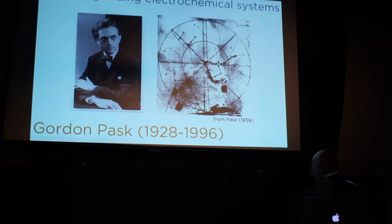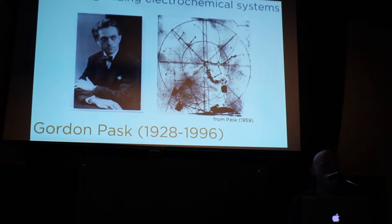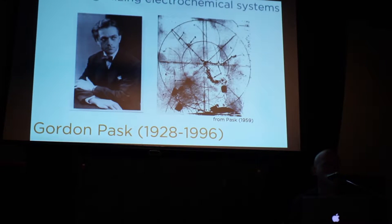What Gordon Pask did back in the 1950s was create what he called an organic computer, at a time when the rise of the digital computer hadn't yet peaked, and he was exploring other means of computation — in particular, analog computation. What you're seeing here is a picture from one of his papers showing what he called dendritic growth within a bath of ferrous sulfate, which is basically a bath of iron and salt. When you apply a mild electrical current through such a bath with one electrode on each side, you start to get growth very similar to what Rob and Laura Lee presented — diffusion limited aggregation.